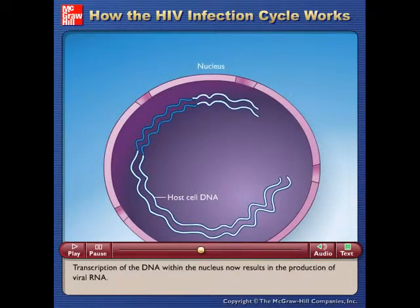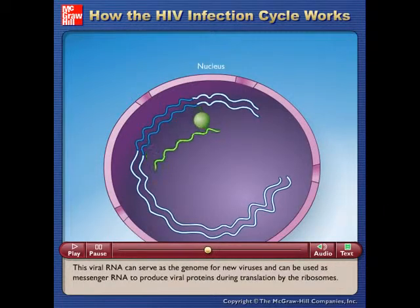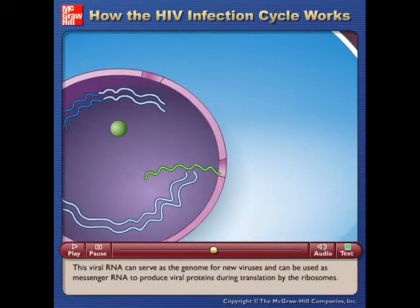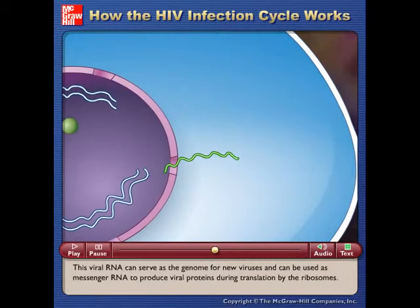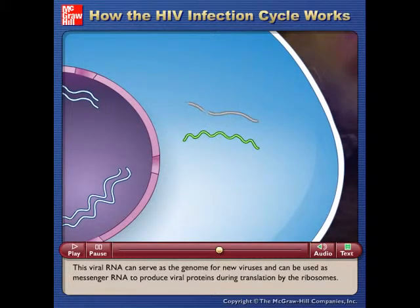Transcription of the DNA within the nucleus now results in the production of viral RNA. This viral RNA can serve as the genome for new viruses and can be used as messenger RNA to produce viral proteins during translation by the ribosomes.